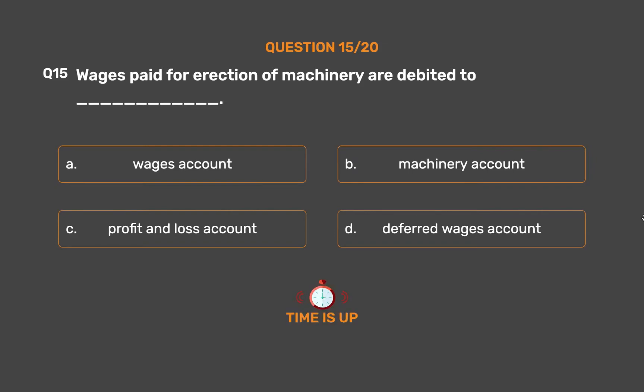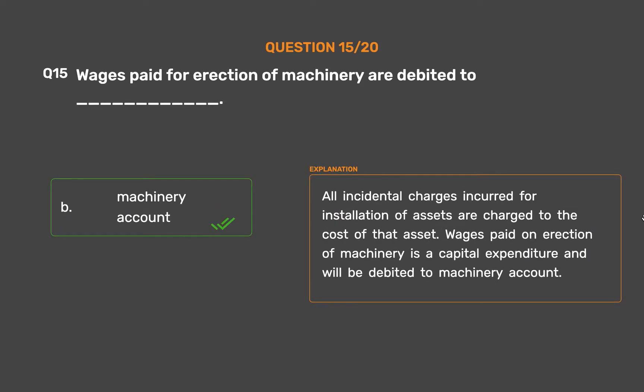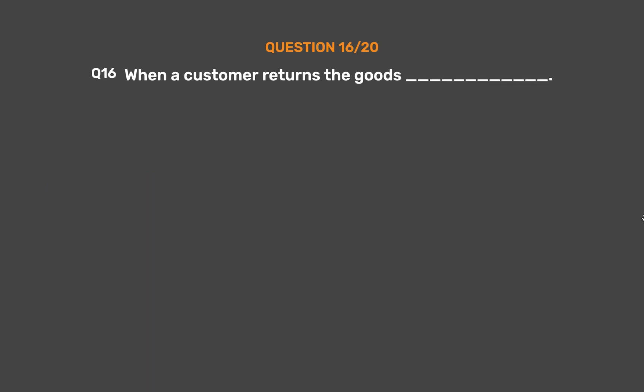The correct answer is option B: machinery account. All incidental charges incurred for installation of assets are charged to the cost of that asset. Wages paid on erection of machinery is a capital expenditure and will be debited to machinery account.